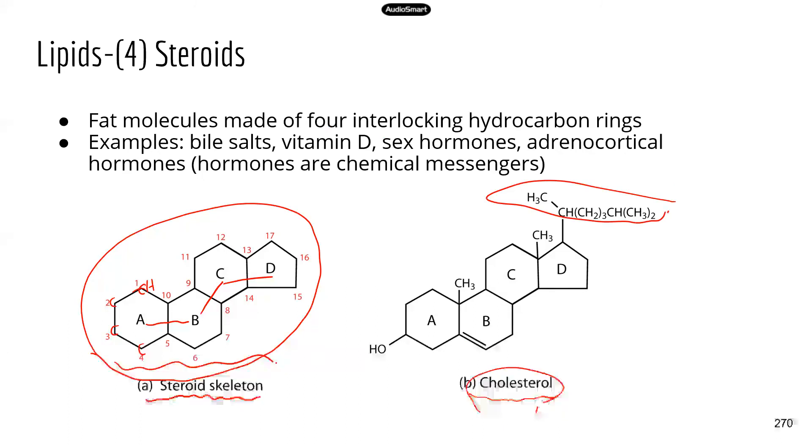There are a lot of substances that we know about are actually steroids. For example, we talk about bile salts. Bile salts are in bile, which is secreted by the liver, but temporarily stored in the gall bladder. Bile contains bile salts, and bile salts are actually steroids. The bile salts help us break down and digest fats.